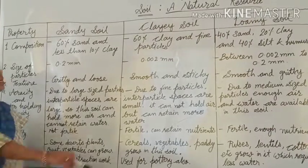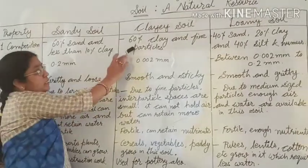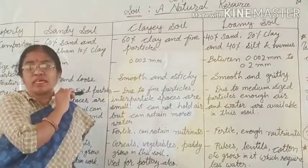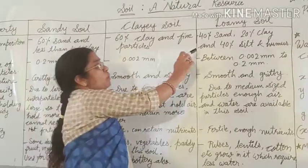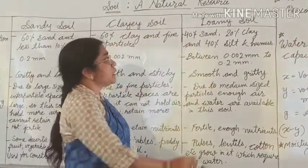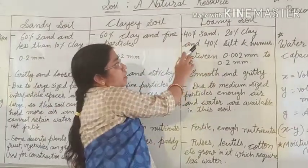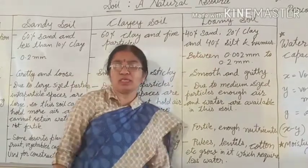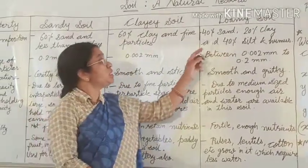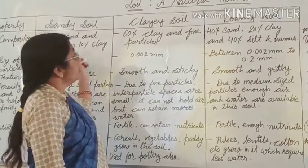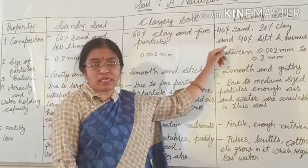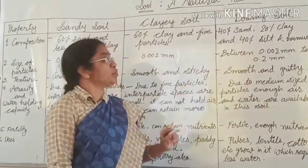In clay soil, 60% clay particles are found, which are very fine particles. Now in loamy soil, 40% sand, 20% clay, and 40% silt and humus are available. That means loamy soil is a mixture of both these types of soil — both types of particles are found in it.